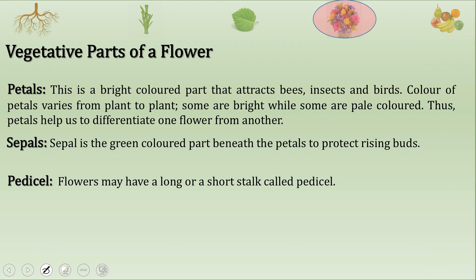Let us move to the vegetative parts of the flower — those parts which are not involved in reproduction. First are petals: these are the bright colored parts that attract insects and bees. The color of petals varies from plant to plant; some are bright while some are pale colored. Next is the sepal: it is a green colored part found beneath the petals that protects the rising bud.